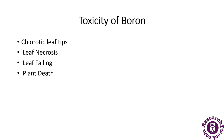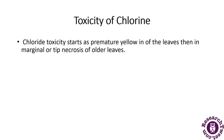In chloride toxicity, it starts as premature yellowing of the leaves, then leads to marginal or tip necrosis of the older leaves.